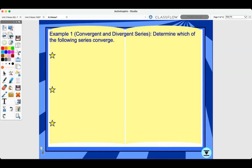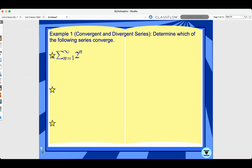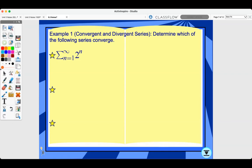Example 1, convergent and divergent series. Determine which of the following series converge. I have the series from n equals 1 to infinity of 2 to the n. We need to find the limit as this approaches infinity. The limit as n approaches infinity of 2 to the n equals infinity, so the series diverges.